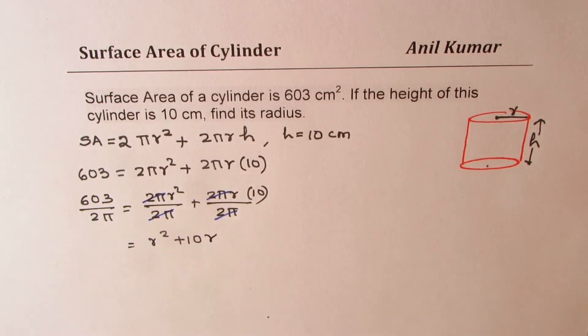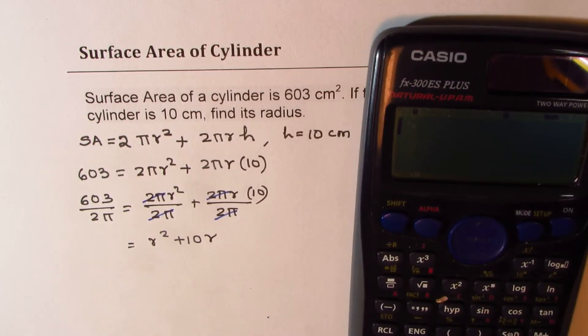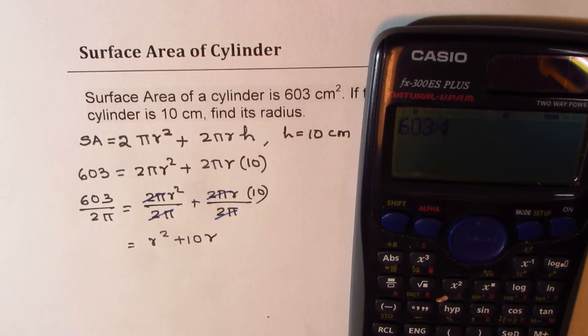Now, what is 603 divided by 2π? Let's use the calculator to figure this out. 603 divided by... let's do it. 603 divided by, let me write within brackets, 2 times π, which is 3.14.